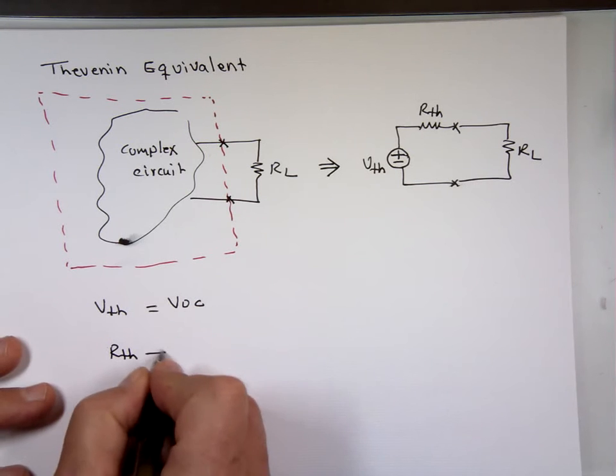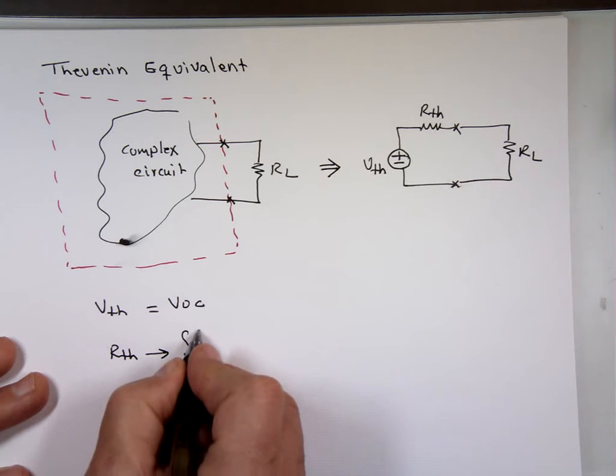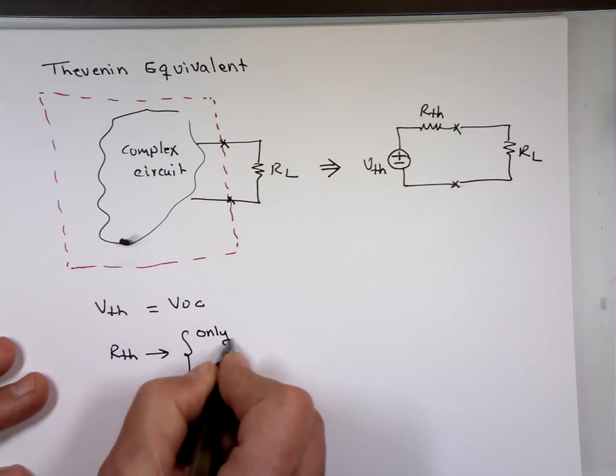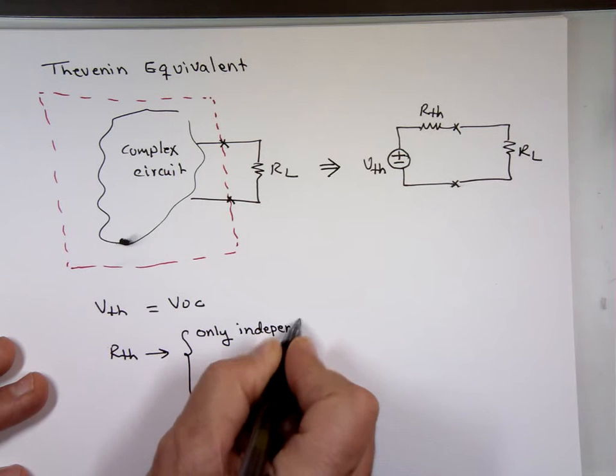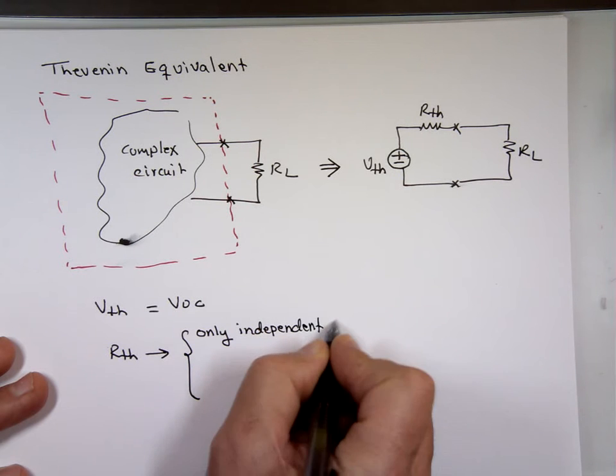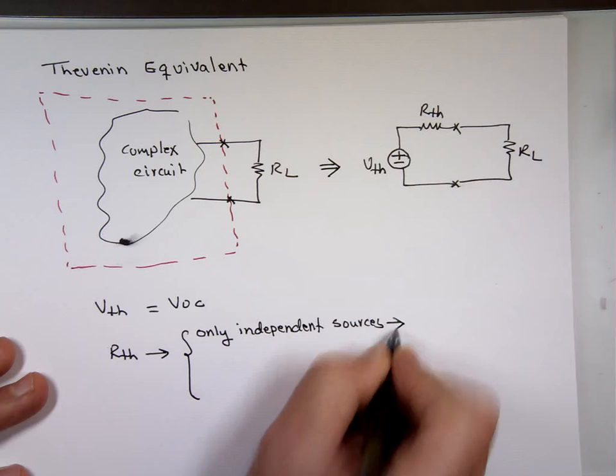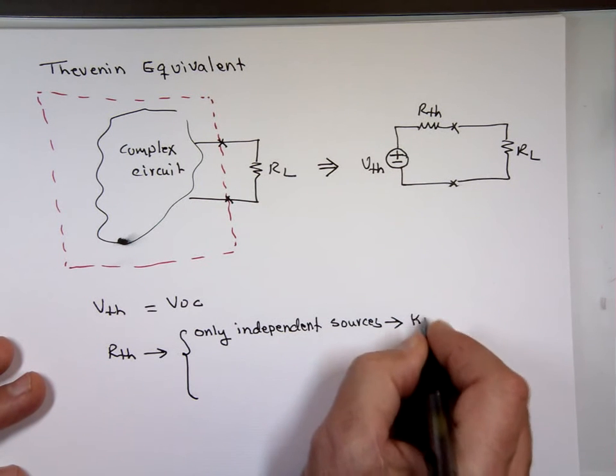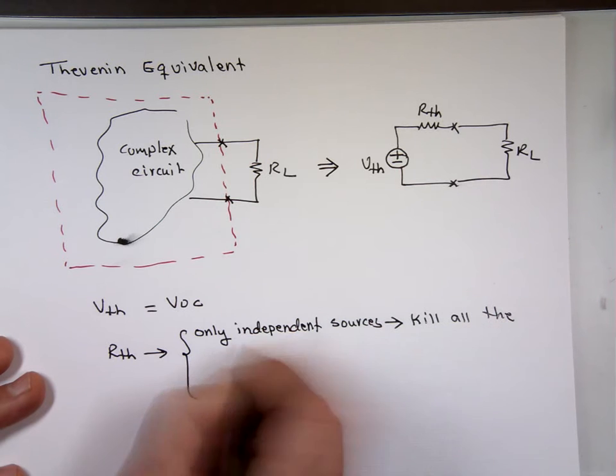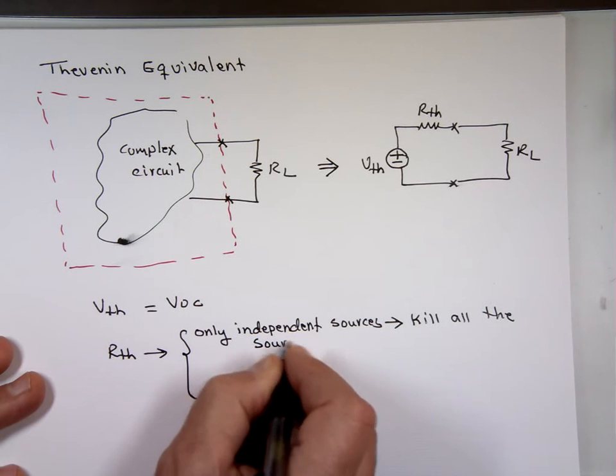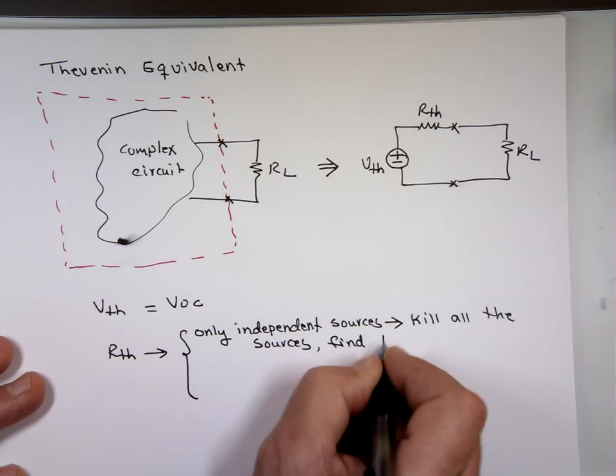R-Thevenin is a different way to find R-Thevenin. I look at R-Thevenin, there are three different ways to do it. If your circuit has only independent sources, then what you do, you kill all the sources, and you'll find R-Equivalent.